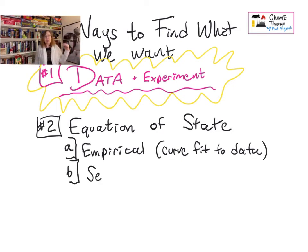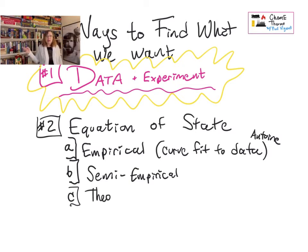And they range from being wholly empirical. That means they're just a curve fit to some data. An Antoine equation is somewhat like that. And then they range at the other end to purely theoretical. Like some folks went and sat and thought, this is how I think molecules behave. And they wrote an equation to describe that. And then we see if it matches with the real world. We'll look at a few different permutations of this.